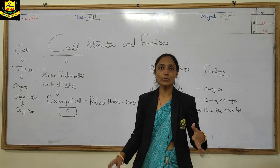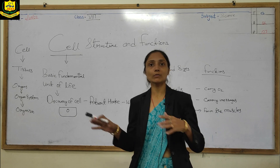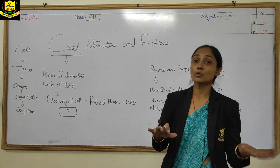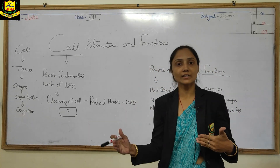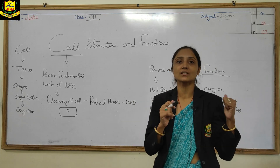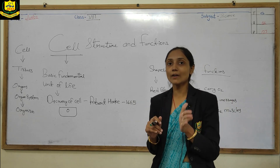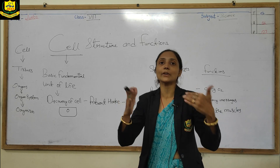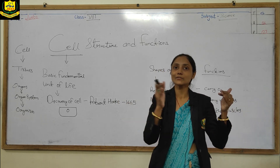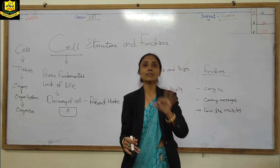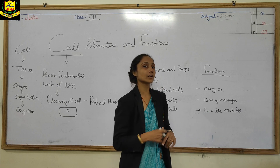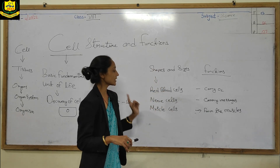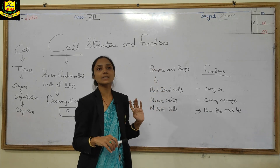Let us understand more about the cell. In our body there are different types of cells because different types of tissues perform different functions. Different tissues have different functions and are made up of different types of cells. Let us consider three types of cells: red blood cells, nerve cells, and muscle cells.